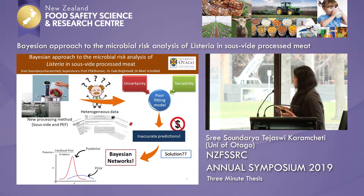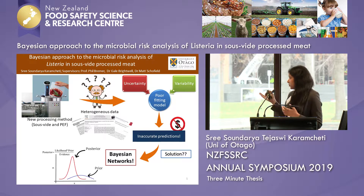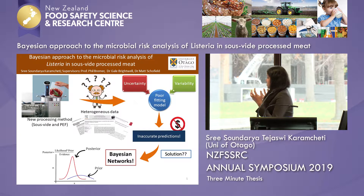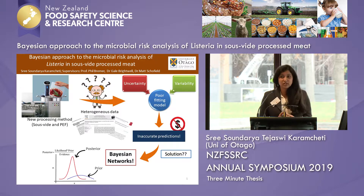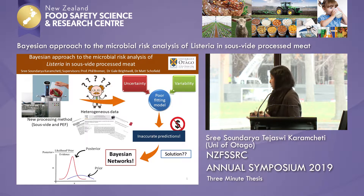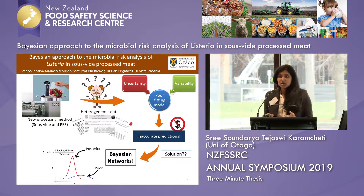This leads to a poorly fitting model, therefore leading to inaccurate predictions by the model. So, how can we tackle this problem of uncertainty and variability? All of this data is available in the literature — how can we put it to use?